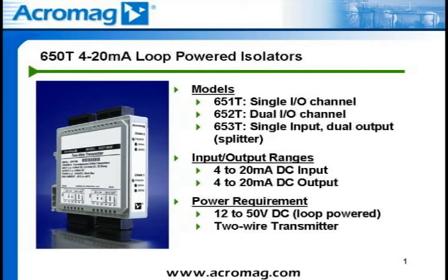Acromag 651T and 652T models are isolated two-wire transmitters for process current input signals. The 651T is a single-channel module, and the 652T offers dual I/O channels. The 653T signal splitter combines a signal input with dual isolated two-wire outputs.